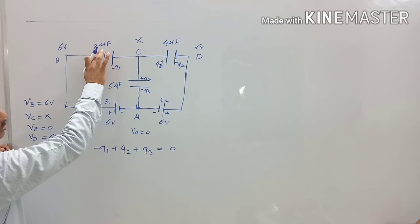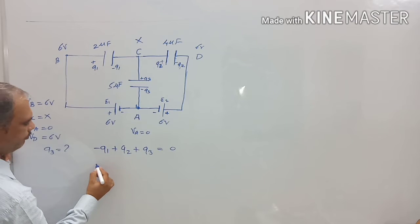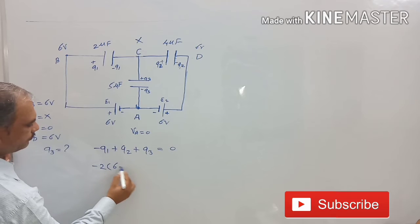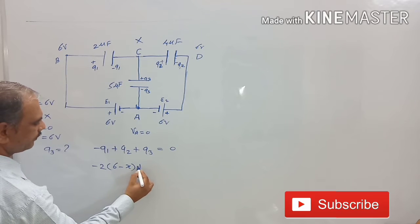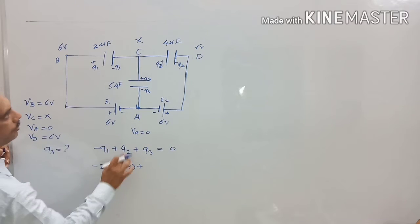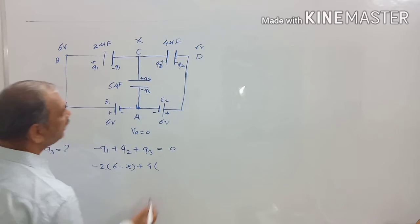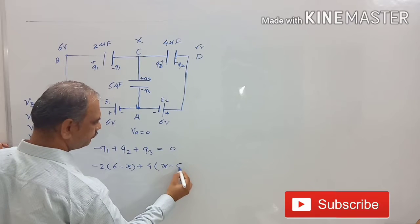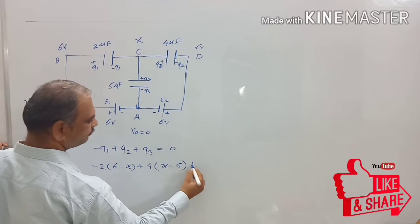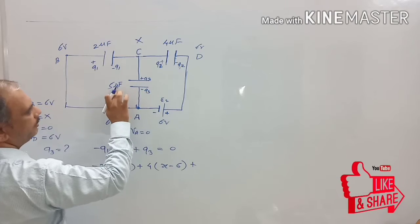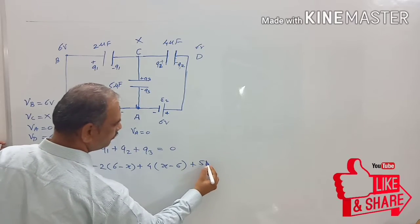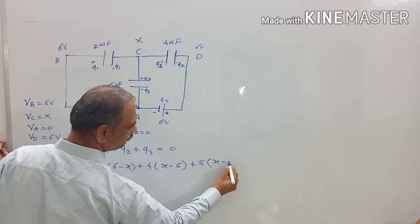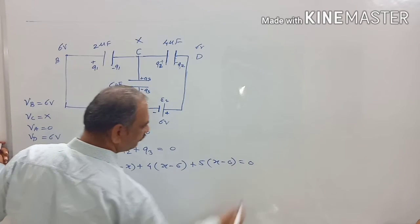Then, what is the value of capacity? 2. Here, minus 2 into 6 minus X, plus what is the value of Q2? 4 in bracket X minus 6, plus what is the value of Q3? 5 in bracket X minus 0. It is equal to 0.